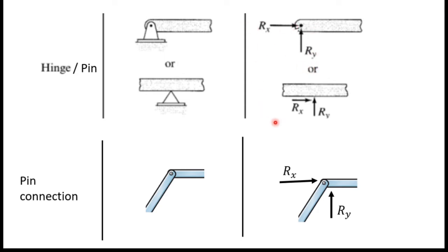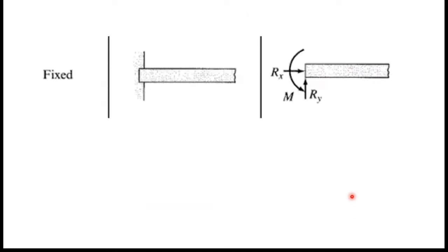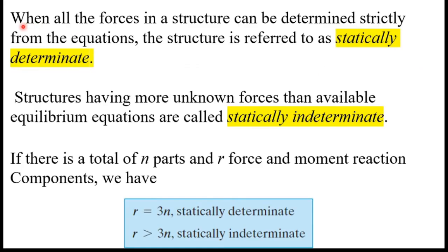If we have a hinge or pin support, we mark two force components: one vertical and one horizontal. If we have a pin connection, we also mark two force components, one horizontal and one vertical. Finally, if we have a fixed support, we mark three components: two force components and one moment component.